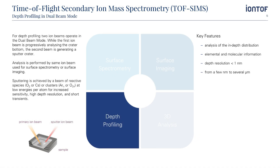For depth profiling, two ion beams operate in the dual beam mode. While the first ion beam progressively analyzes the crater bottom, the second beam generates a sputter crater. Sputtering is achieved by a beam of reactive species — oxygen or cesium — or clusters at low energies per atom for increased sensitivity, high depth resolution, and short transient. Key features include analysis of the in-depth distribution of elements and molecules, a depth resolution of around one nanometer, and the ability to analyze samples from a few nanometers to several microns in depth.